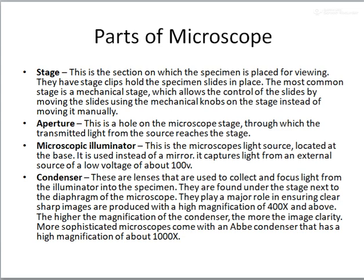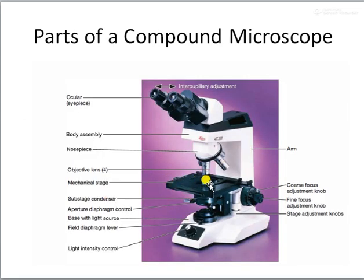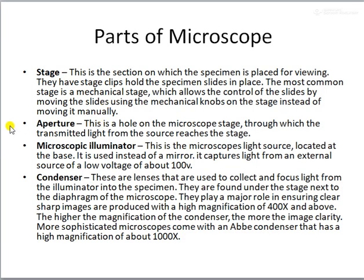The aperture is the small hole in the middle of the stage through which light passes from below, and that is called the aperture of the microscope. Below the stage there is a light source. This is an electrically supported microscope, so there is a power supply and a light source. Sometimes you can also have a mirror to adjust and focus the light. A low voltage of about 100 volts is used for the external light illuminator.